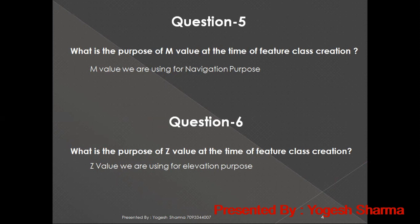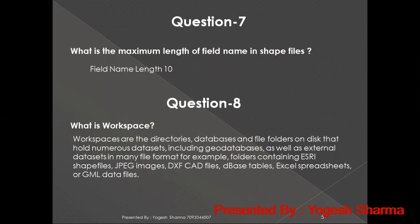What is the maximum length of the field name in a shapefile? The maximum field name length in a shapefile is 10 characters, because all the data is stored in the .dbf file, and in a DBF file, a field name must not exceed 10 characters. What is a workspace in ArcGIS? A workspace is a directory, database, or file folder that holds numerous datasets including geodatabases, as well as external datasets in many file formats — for example, folders containing ESRI shapefiles, JPG images, DXF files, dBase tables, Excel spreadsheets, or GML data files.